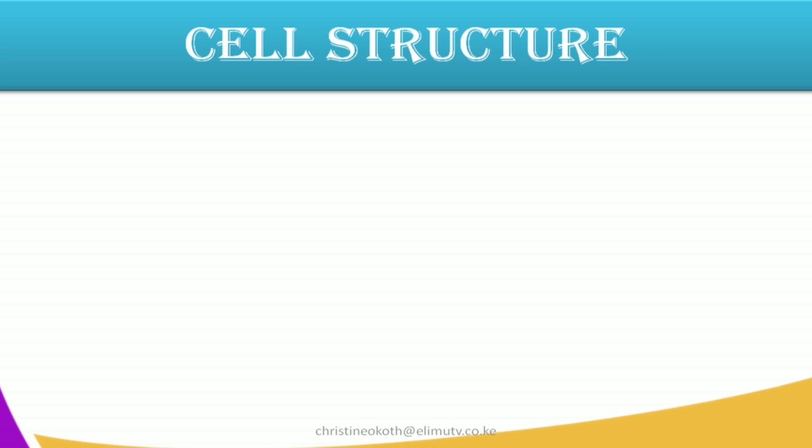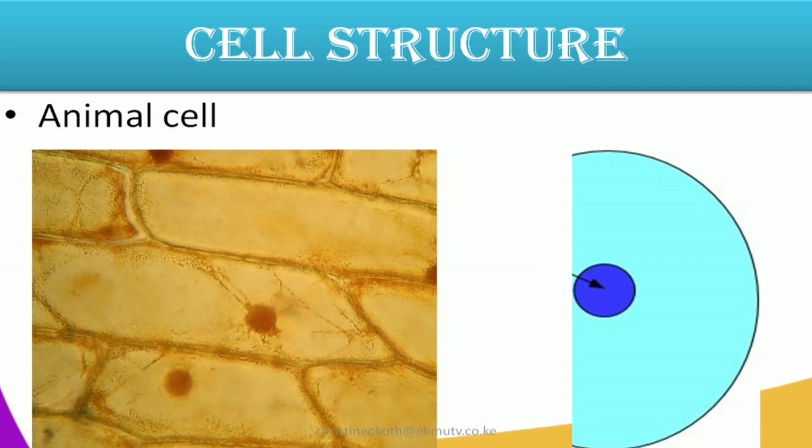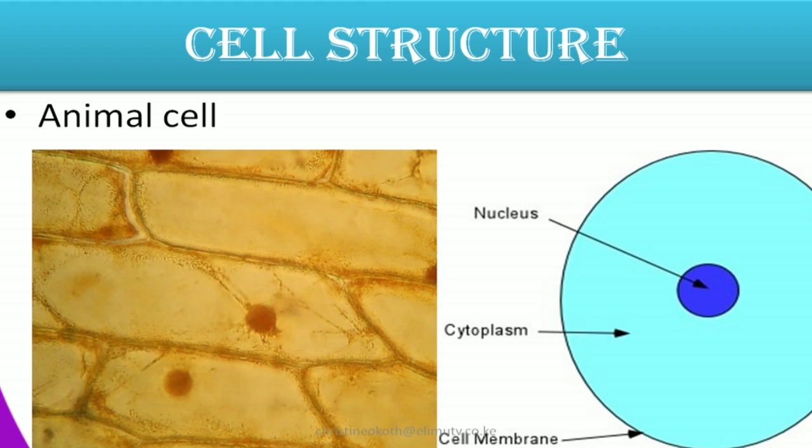Proceeding to the animal cell. When you take a cell of an animal and place it under a light microscope, that is what you will see. There's a rough sketch of how an animal cell looks like under a light microscope. Those are some of the features that you find on the animal cell. First we have the nucleus — that bluish part over there. Then we have the cytoplasm and we have the cell membrane.